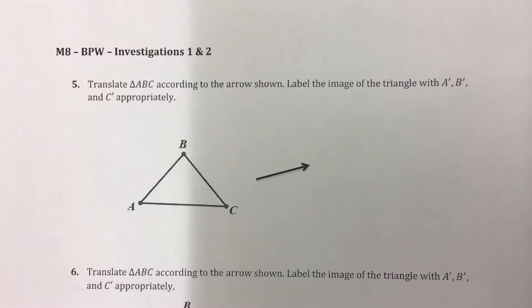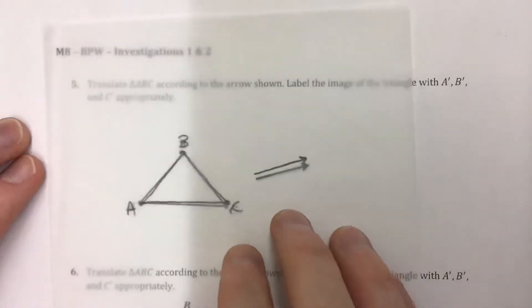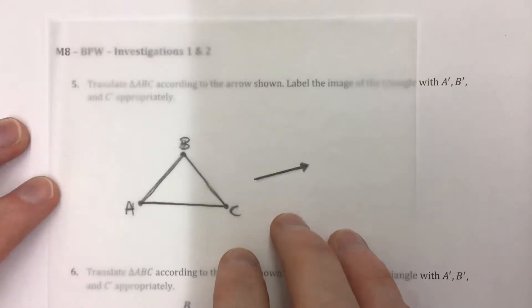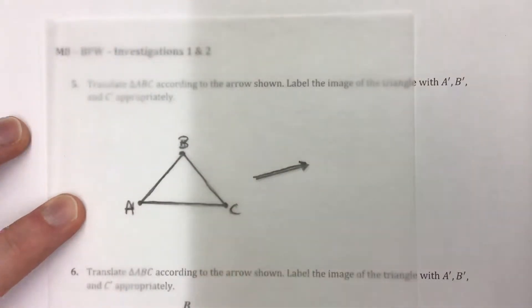What we're going to do first is trace the triangle on patty paper exactly the way it looks on our paper. So we're going to trace this. I already have it traced. We're going to trace it with the letters on there and the arrow in the right position and the right length of everything. It's got to be the exact same thing we see on our paper copied identically.